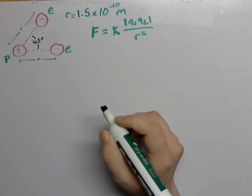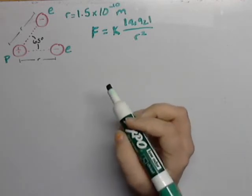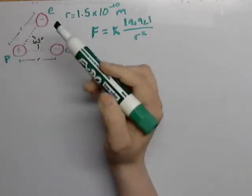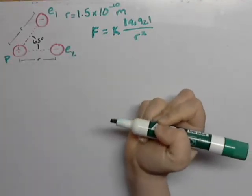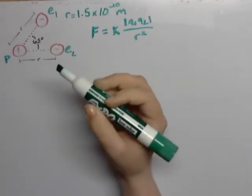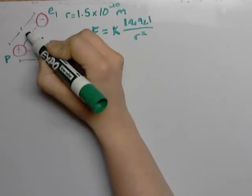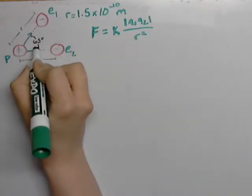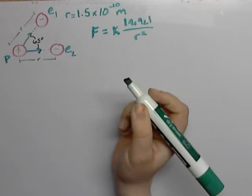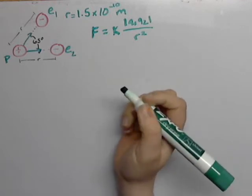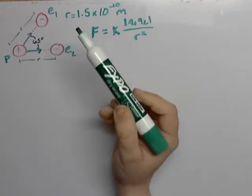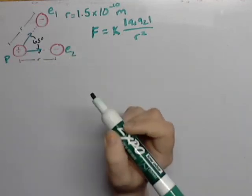Since we're doing a net force, we're going to be figuring out the total force that E1 is doing on P and E2 is doing on P. These two charges have opposite signs to each other, so we know that the forces are going to be attracted to each other.